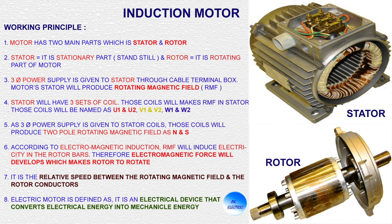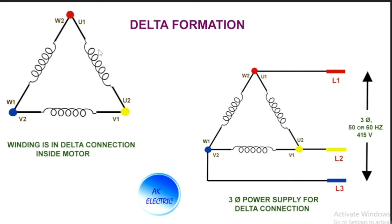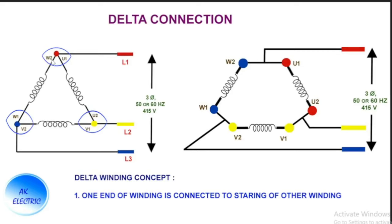Now we will discuss winding connections. First we will see about delta connections. This is the delta formation — this is how the circuit representation looks for delta winding, representing a triangle shape. Here you can see three sets of coil: U1 and U2, V1 and V2, W1 and W2. The three-phase power supply is connected as L1, L2, L3. For India there will be about 50 Hz; in Gulf countries it will be about 60 Hz. Both frequency ranges can be connected for delta winding.